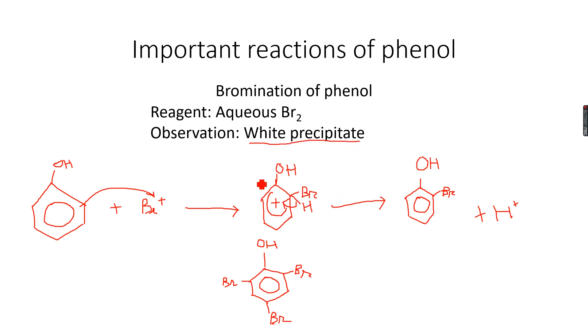They will ask you for the observations. There are two observations - I forgot to write one. One is that we see a white precipitate, and the other is that the Br₂ decolorizes. It is initially red-orange and then it decolorizes. If you remember, a similar thing happens when we react bromine with alkenes - the Br₂ decolorizes and becomes colorless.